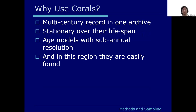Our goal with using corals is to get a multi-century record in one archive. Compared to foraminifera, which give one average sample per 100 years, corals can give sub-monthly resolution with certain proxies or annually with other properties. Corals are also stationary over their lifespan, so you know exactly what location you're reporting from.